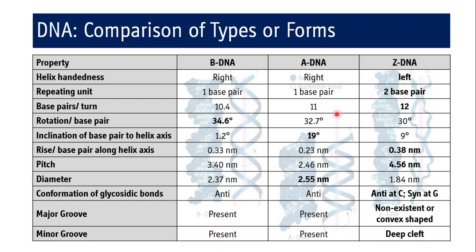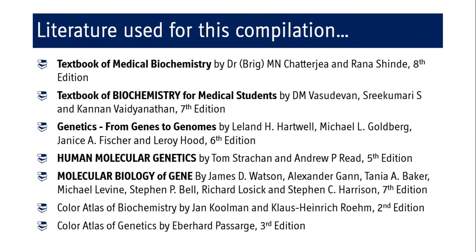In this session we have discussed the structure of DNA — the primary structure covering linkage between deoxyribose sugars, the secondary structure covering the double helix, and the various types of DNA: B-DNA, A-DNA, and Z-DNA, along with their comparison.